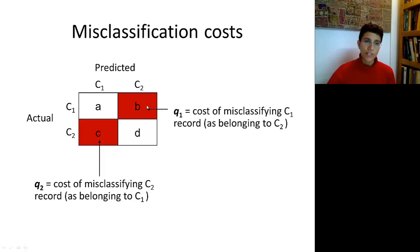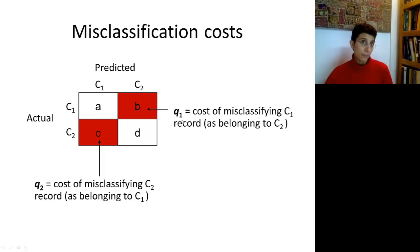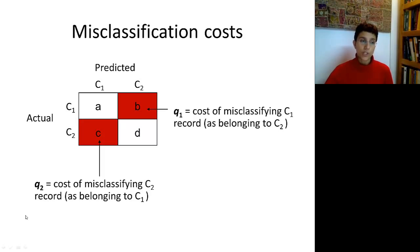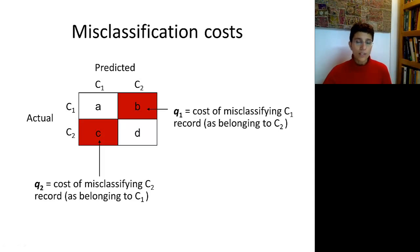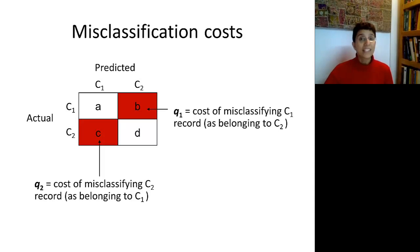We can attach to each one of these records a cost of misclassifying, and these costs don't necessarily need to be the same. For example, misclassifying a C1 might be more costly or less costly than misclassifying a C2. We want to incorporate such costs — I'll denote them by Q1 for the cost of misclassifying C1, and Q2 for misclassifying C2 — directly into the algorithm so that we find a discriminant analysis model that produces the best results given these costs.